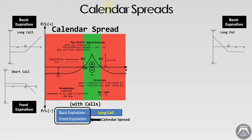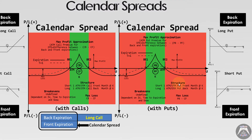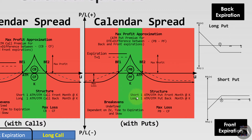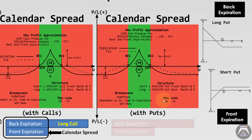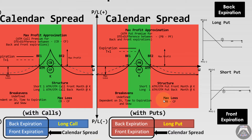The same approach applies to puts. We have a long put in the back and a short put in the front at the same strike price — a put calendar spread. The structure is: short one at-the-money or out-of-the-money put in the front month at strike K, and long one out-of-the-money or at-the-money put in the back month at strike K. Long in the back, short in the front. The max loss is strictly what we paid for it — the most we can lose — and we're talking about when we have both expirations present.